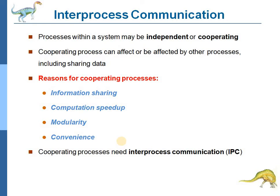The mechanism for cooperating processes to communicate with each other is called inter-process communication, or IPC. Inter-process communication allows two processes to exchange data and information between them. IPC provides a mechanism to allow processes to communicate and synchronize their actions without sharing the same address space. IPC is useful in a distributed environment where communicating processes may reside on different computers connected with a network.